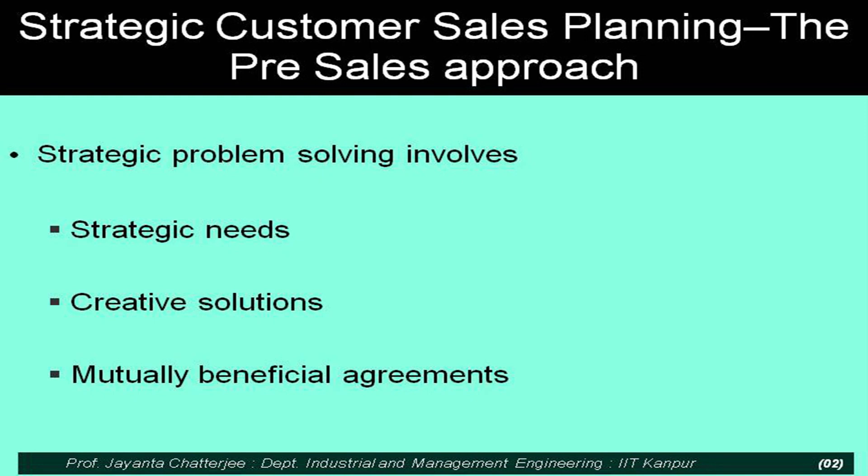A little bit of highlight here is the element of strategy — the element of looking at the bigger canvas, understanding the customer's needs not only from expressed viewpoints, but also in the context of the customer's own success requirements. So the strategic needs of the customer, coming up with a creative solution and a mutually beneficial agreement — we will discuss this mutual benefit aspect more later on.